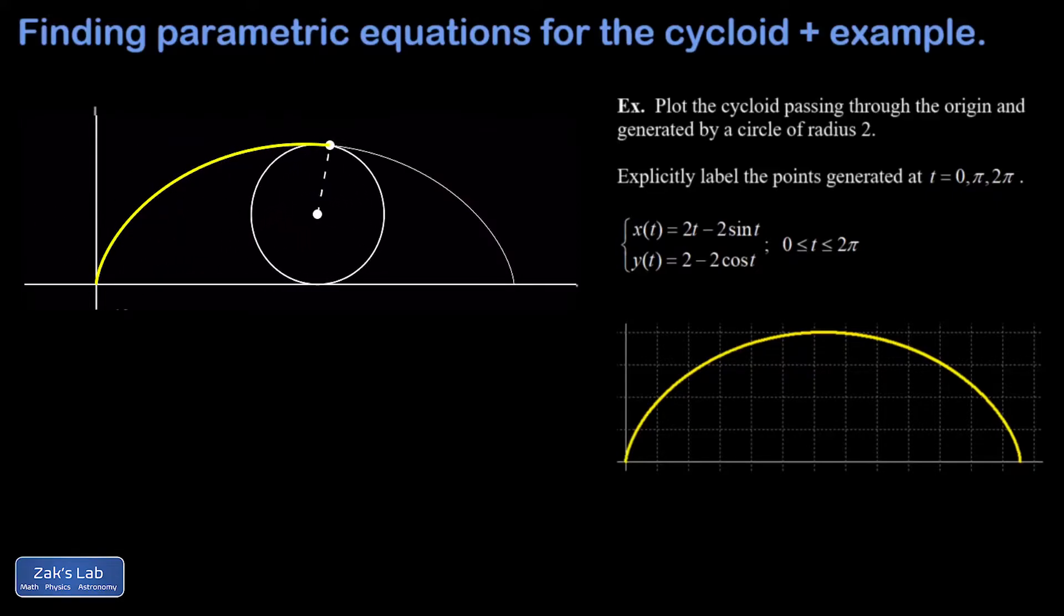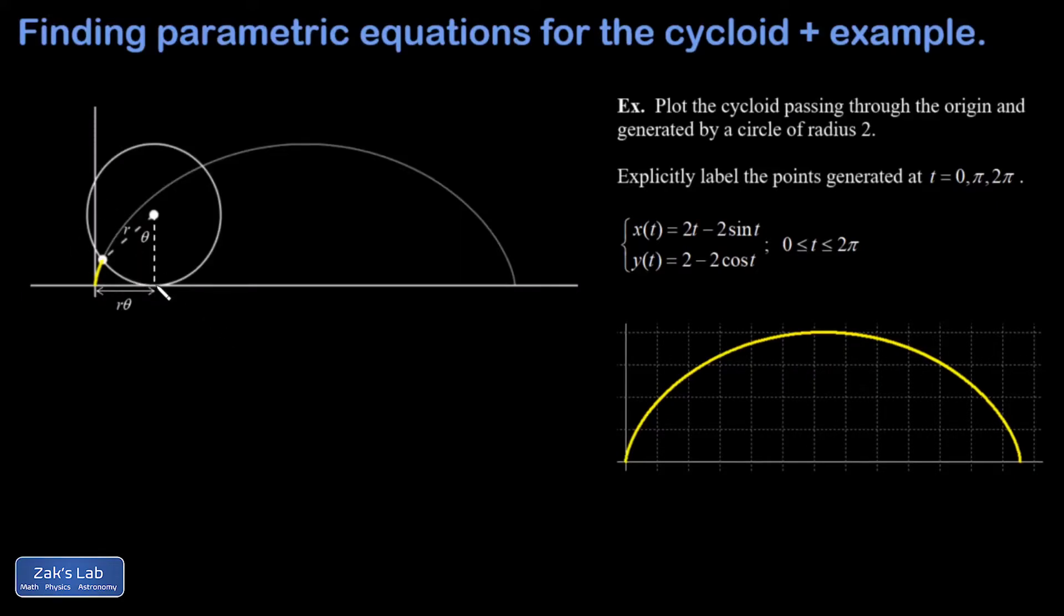The picture looks something like this. In this picture, I've allowed the circle to rotate through an angle of theta. When it does that, it's moved a horizontal distance of r theta, because that's equal to the arc length that it's rolled through since it began rolling. Remember the old formula from geometry: s equals r theta, relating the arc length, the radius, and the subtended angle.